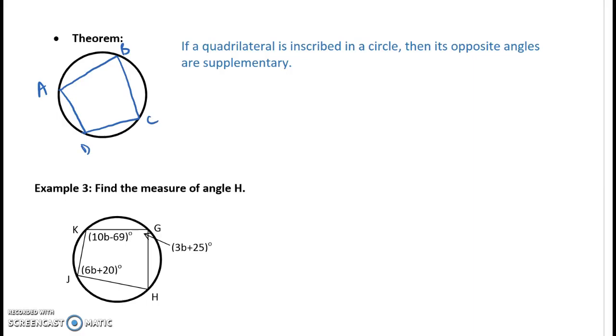So remember, opposite angles are angles that are across the diagonal from each other. So for example, angle B and angle D are opposite, right? Angle A and angle C are opposite. So here we would be able to say that the measure of angle B plus the measure of angle D equals, remember supplementary is, 180. Think S for straight. And then the measure of angle A plus the measure of angle C equals 180. And remember, all four together add up to 360 because it's still a quadrilateral.